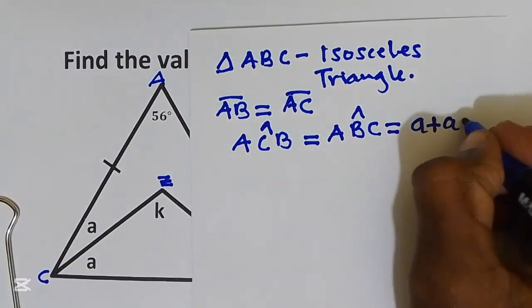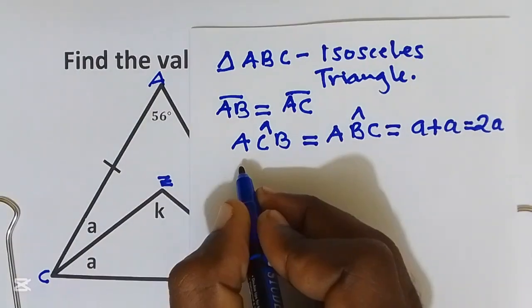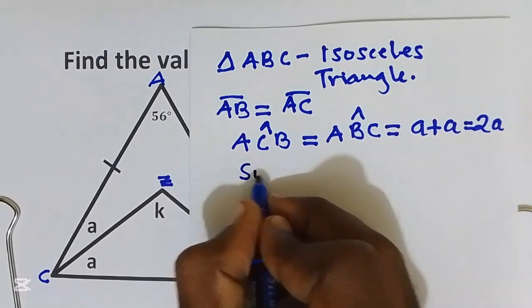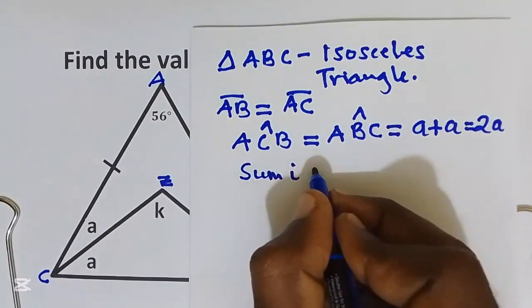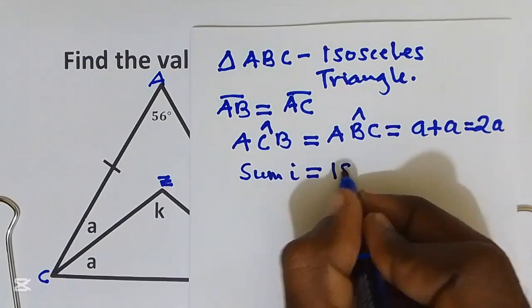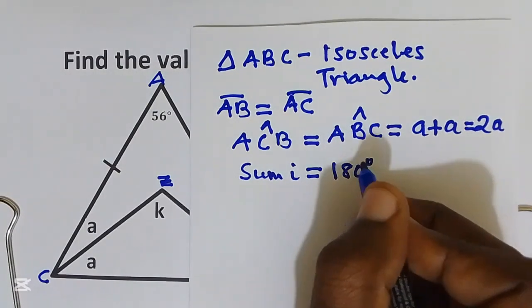The sum of interior angles of any triangle is equal to 180 degrees.